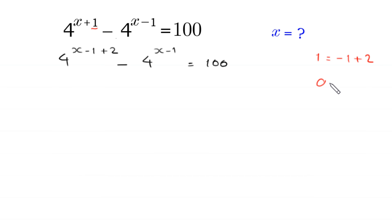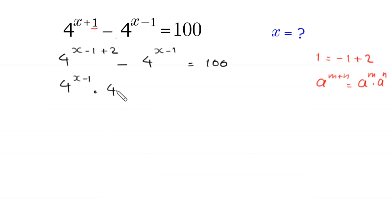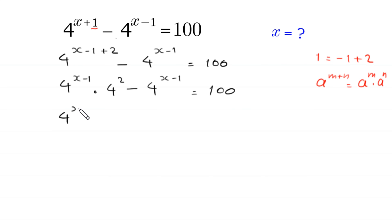Now, by using this property — a to the power m plus n is equal to a to the power m times a to the power n — this 4 to the power x minus 1 plus 2 will become 4 to the power x minus 1 times 4 squared, minus 4 to the power x minus 1, is equal to 100. Now we can factor out 4 to the power x minus 1 as a common factor, giving 4 to the power x minus 1 times (4 squared minus 1) is equal to 100.